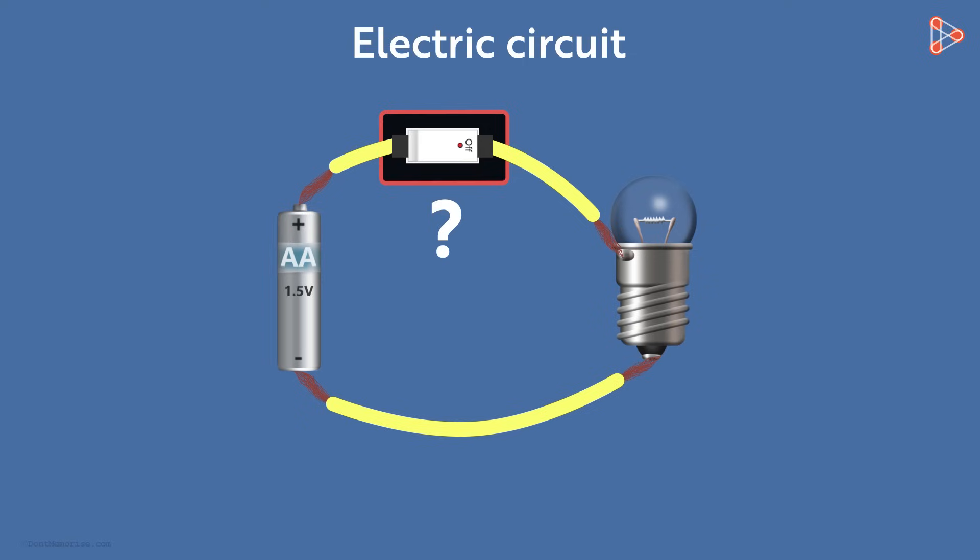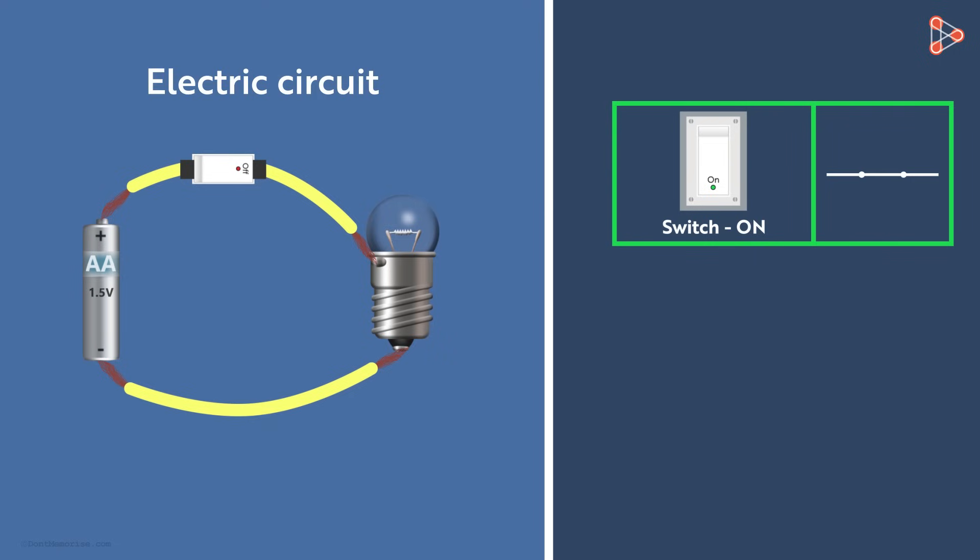What is the symbol for switch? There are two symbols for a switch. This symbol is used when the switch is on and this symbol is used when the switch is off.